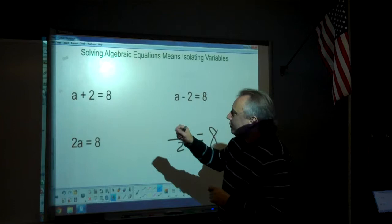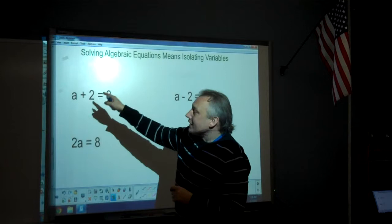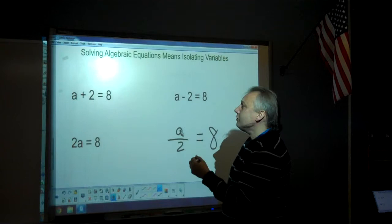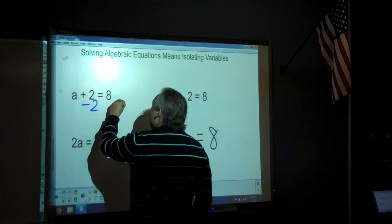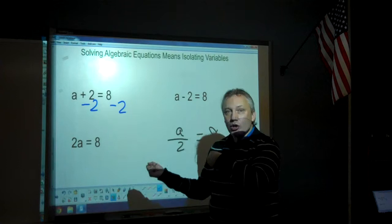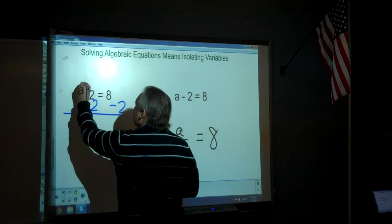Now you isolate a variable by doing the opposite math on both sides to the thing that is with the variable. So for instance, when I have a plus 2 equals 8, I need to do the opposite of plus 2, which is minus 2. And it is a rule of math that to keep an equation an equation, when you change one side, you must change the other side in exactly the same way.